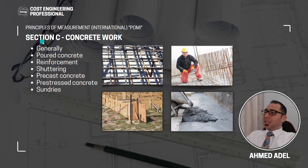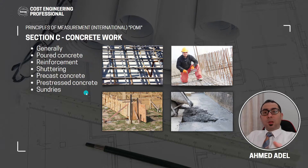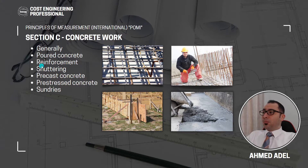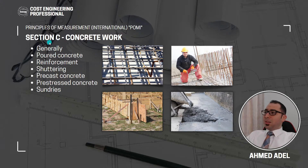In upcoming videos we will take each section in detail — the items, units of measurement, how to write descriptions, and what to include in quantities. Now, Section C — Concrete Works. Generally, any concrete used in the project should be ready-mix concrete from a well-established supplier. Items under concrete works include poured concrete, reinforcement, shuttering (formwork), precast concrete, prestressed concrete, and post-tension works.